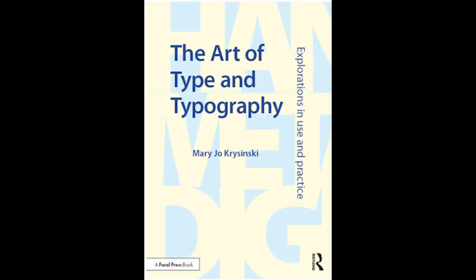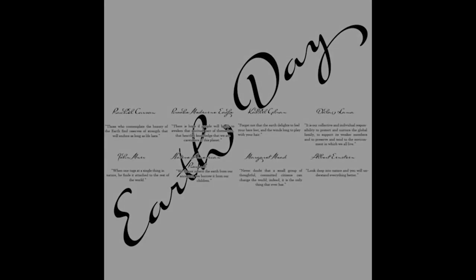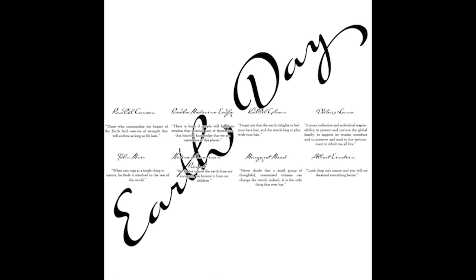a type family includes all the variations of weight and styles that relate to one another by design. All type styles within a family share common characteristics, making them appear harmonious when used together.